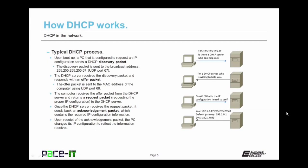Here is the typical DHCP process. Upon boot up, a PC configured to request an IP configuration sends a DHCP discovery packet. The discovery packet is sent to the broadcast address 255.255.255.255 on UDP port 67. The DHCP server is listening on that port. When the DHCP server receives the discovery packet, it responds with an offer packet, basically saying it's here to help. The offer packet is sent back to the MAC address of the requesting computer on port 68.